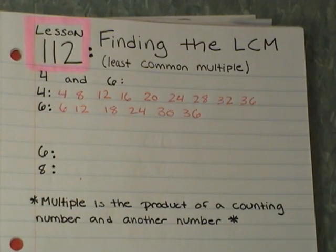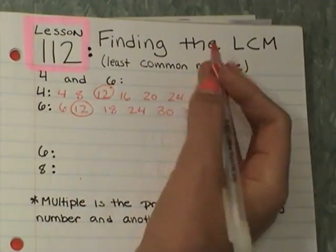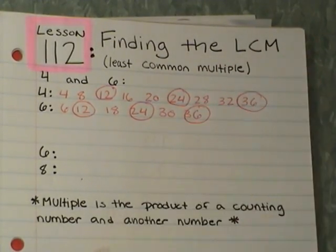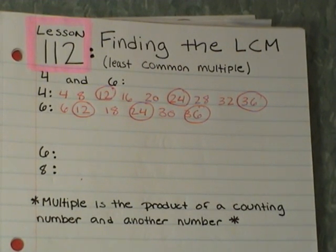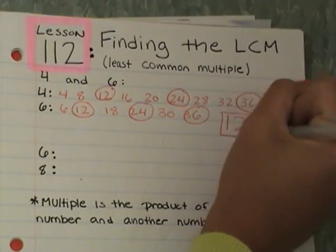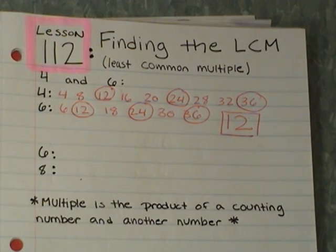Now I need to go back and circle all the ones they have in common. I noticed 12 and 12, 24 and 24, and 36. But looking at the directions — the least common multiple — we want the smallest. So I look at all the ones I've circled, and my smallest number is 12. The LCM of 4 and 6, the least common multiple, is 12.